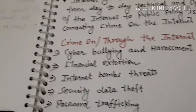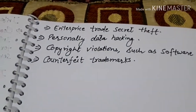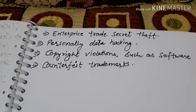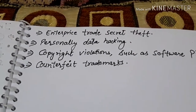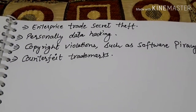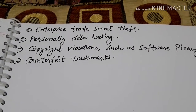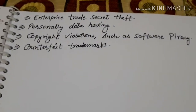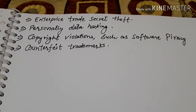The next is trafficking. After that is enterprise trade secret theft — business-related information and data can be stolen. Then there is personal data hacking — personal account data and passwords can be hacked. These are crimes done using the internet.